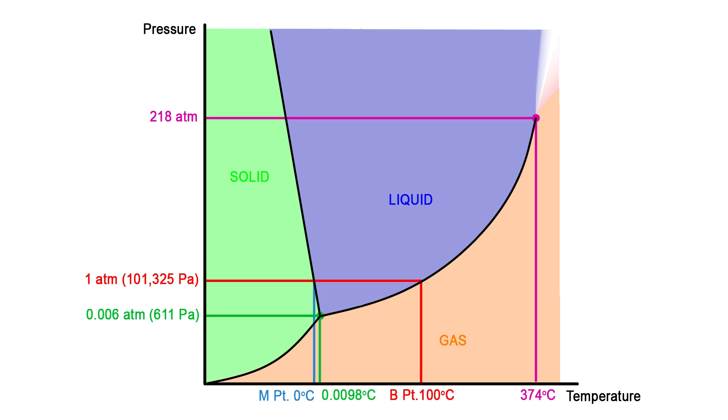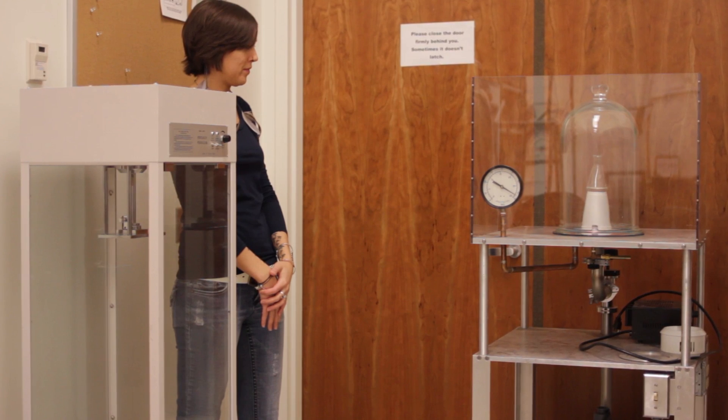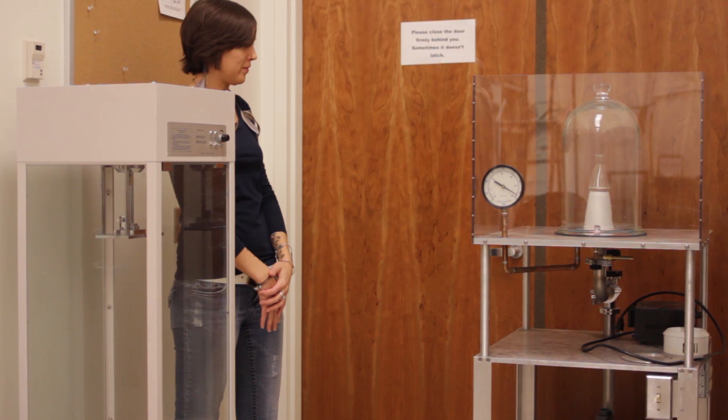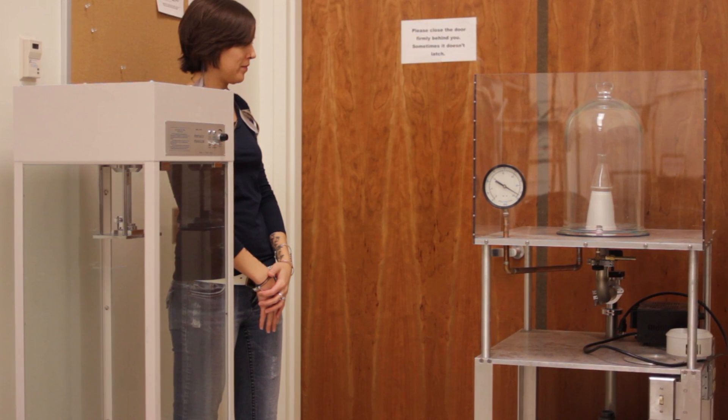Let's look at a simple demonstration of a phase transition and represent it on this diagram. The apparatus shown here, a vacuum pump and a bell jar, allows one to expose substances to very low pressures. The chamber is presently exposed to the atmosphere as we place a small amount of water under the bell jar.